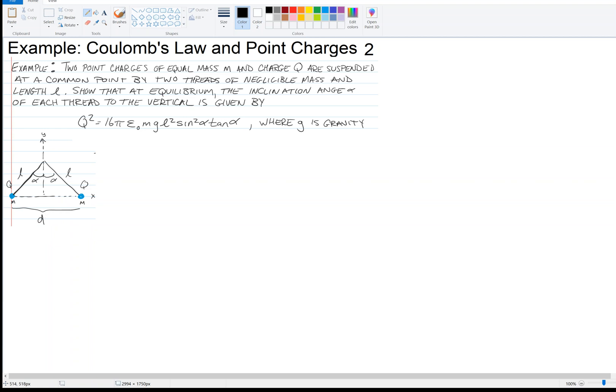Note that that separation distance D is, if I take the length L which is the hypotenuse of one of those triangles and I multiply it by the sine of alpha, that gives me half of the distance. So if I take twice that, now I've got the separation distance D.